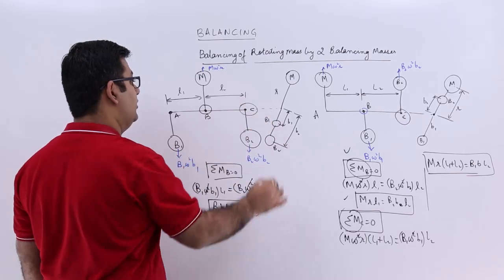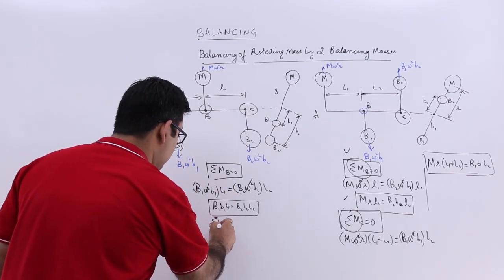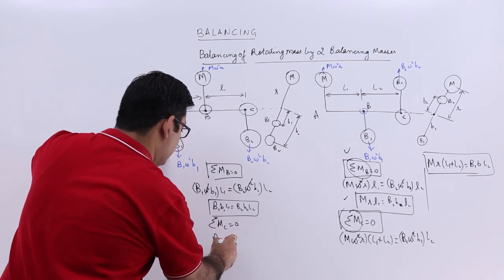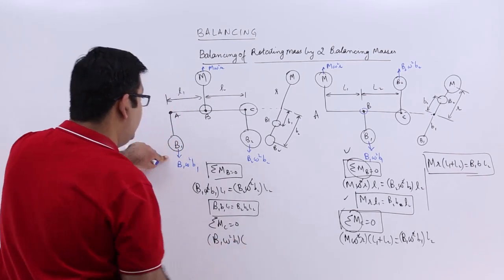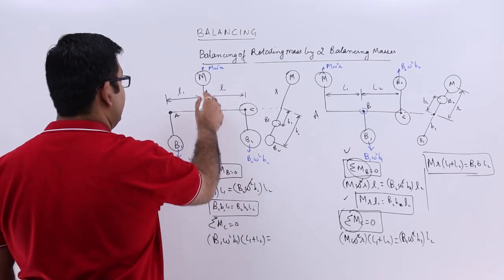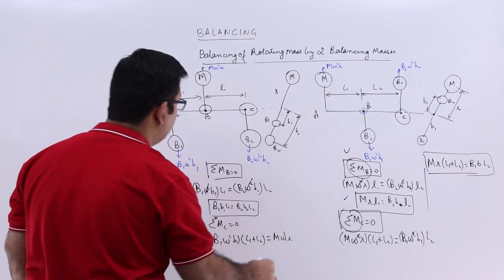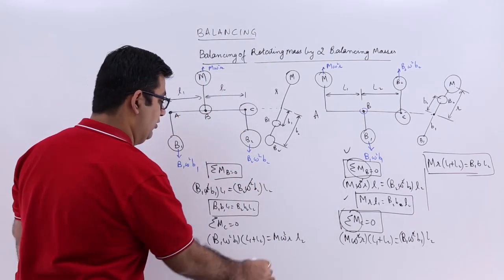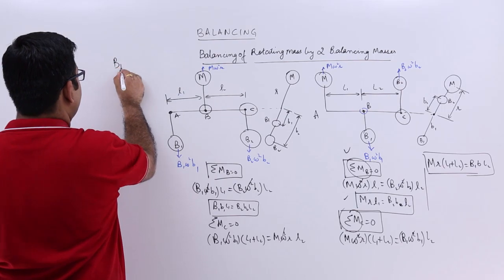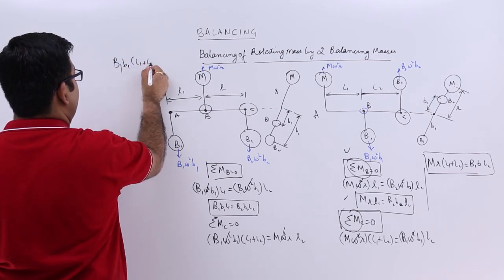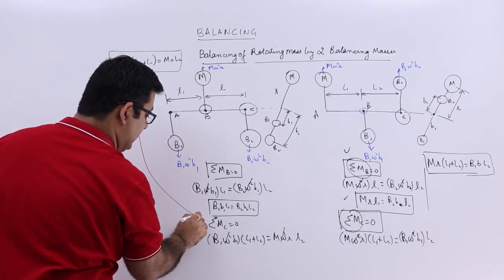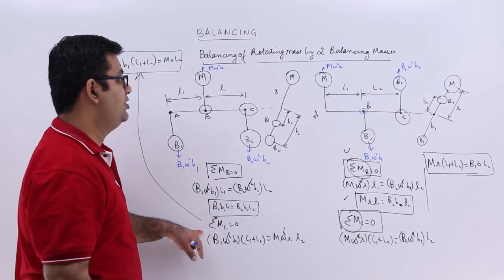The second condition is obtained by taking the moment about point C, setting summation of moments about C equal to zero. This gives: B1·ω²·b1·(L1 + L2) = M·ω²·R·L2. Cancelling ω², the final condition is: B1·b1·(L1 + L2) = M·R·L2. This is the condition obtained after equating the moments about point C to zero.